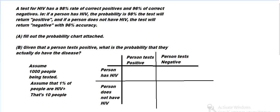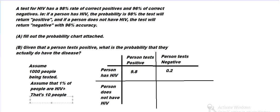1% of a thousand is 10, so there are 10 people with HIV. The probability that they test positive is 98%, so 9.8 of them on average will test positive, and then 0.2 will test negative of those with HIV. And then there are 990 people without HIV.